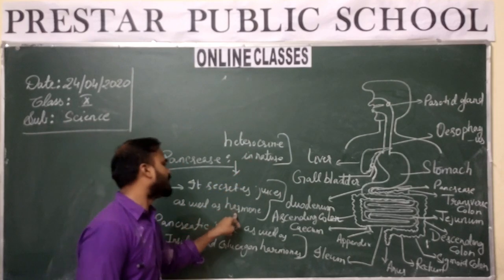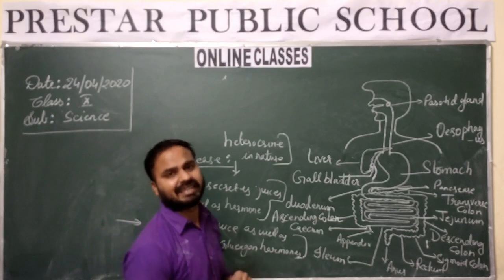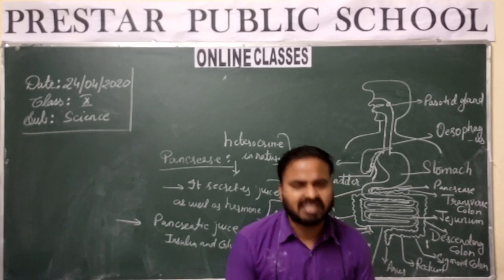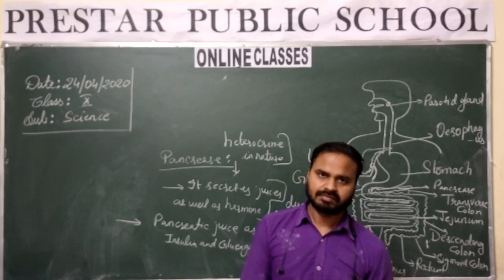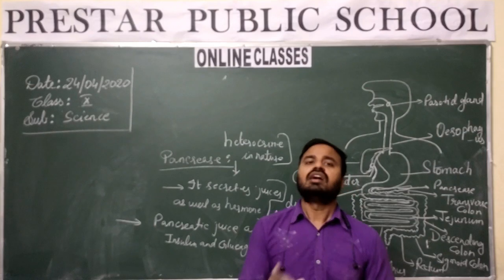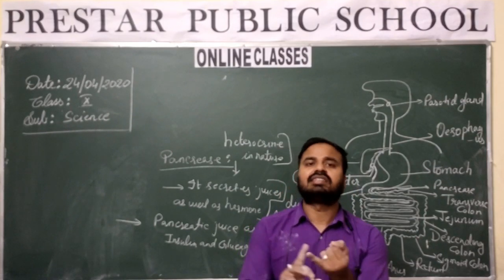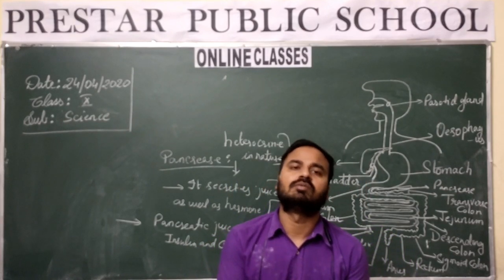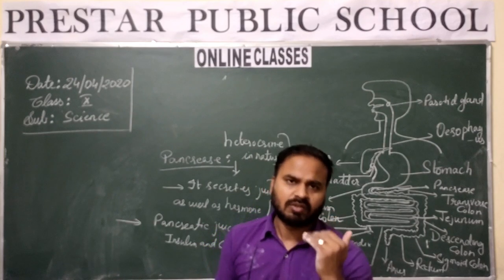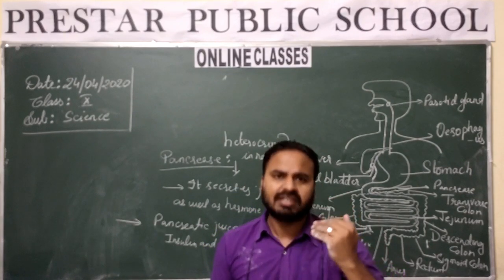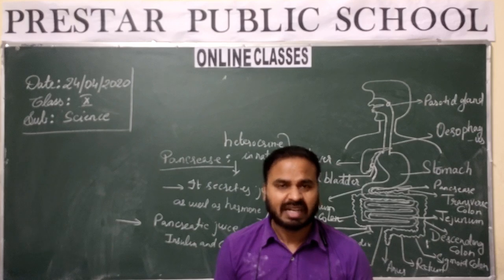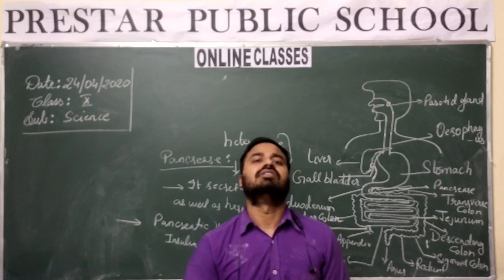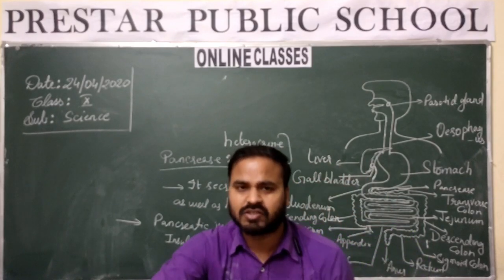The pancreas secretes juices as well as hormones. With the juice, it secretes pancreatic juice. And it secretes insulin as well as glucagon hormones. The function of insulin is that it converts glucose into glycogen. What is the function of insulin? It converts glucose into glycogen.